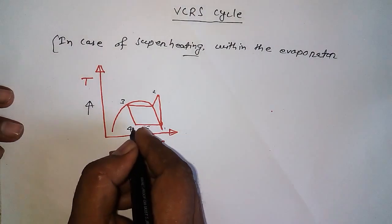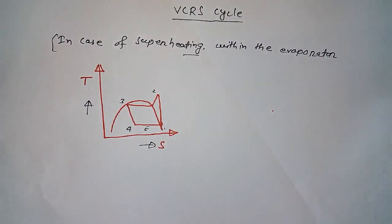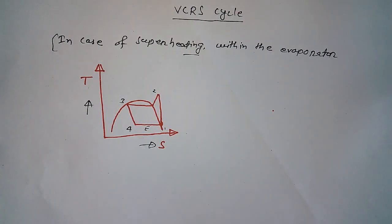Here we have the evaporator. In this process from 4 to 1, the evaporator absorbs heat from the refrigerator. That's why inside the refrigerator we get less temperature than the surrounding.